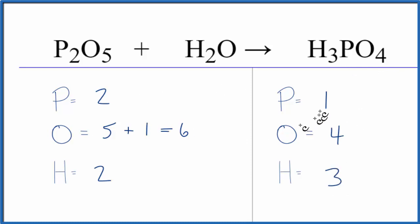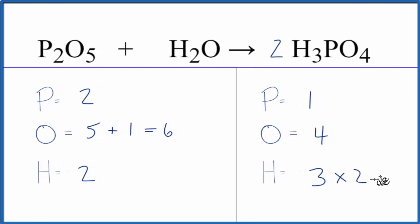At this point I think I'll put a two in front of the H3PO4 and that would balance the phosphorus atoms. So now we have to count all this up. So we have three times two, that'll give us six. Phosphorus one times two, that'll give us two. So we balance the phosphorus atoms.